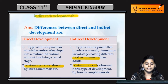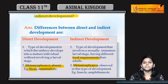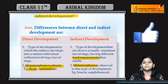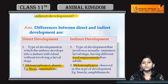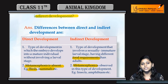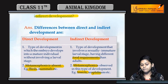Examples of direct development are birds and mammals — the individual grows directly into an adult without an immature larval phase. Examples of indirect development include insects and amphibians, which undergo metamorphosis.